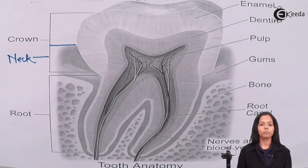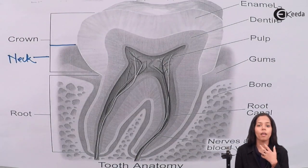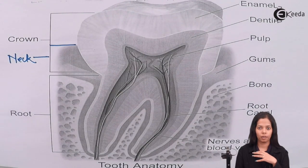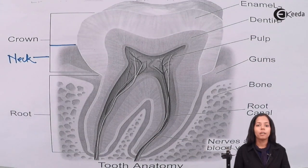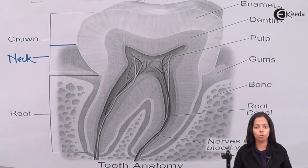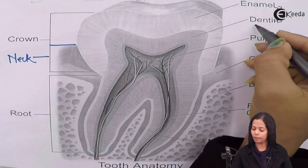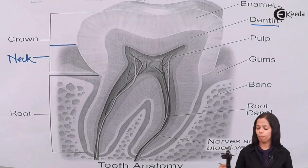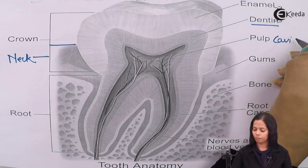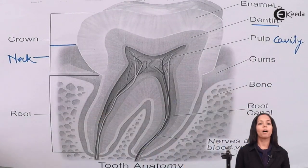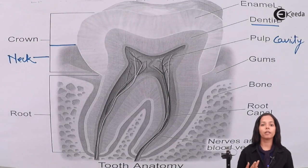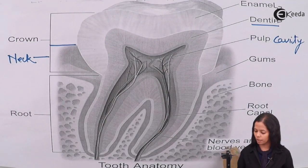Speaking about the crown: the crown is covered by a layer called enamel. Enamel is the hardest substance of your body. Below enamel there is the main structure or the skeleton of the tooth, called dentine. Dentine in the center consists of the pulp cavity, which has nerve supply, blood supply, and various fluid tissues, as labeled in the diagram.